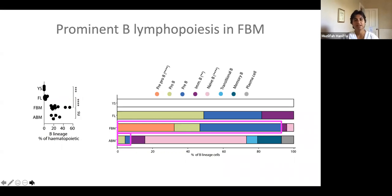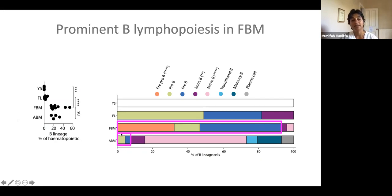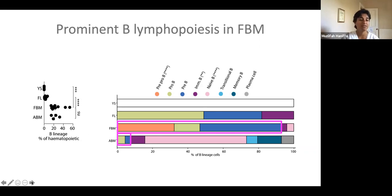Another lineage that becomes abundant in the fetal bone marrow is the B lineage. There are no B cells in the yolk sac, very few in the fetal liver, and the proportional representation of cells in the fetal bone marrow and adult bone marrow are very similar for the B lineage. But the types of B lineage cells are different: in the fetal bone marrow you have a lot of progenitors — the pre-pro-Bs, the pro-B and the pre-B — whereas in the adult bone marrow, the predominant B lineages are naive, transitional, memory and plasma cells. Interestingly, childhood leukemias are very much B lymphoblastic leukemia, and the presence of these progenitor substrates may be one reason for why this is the case.